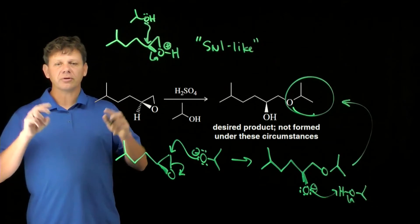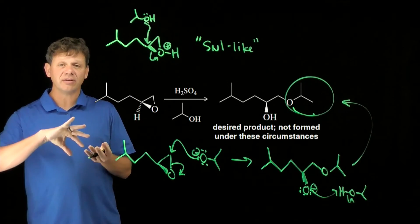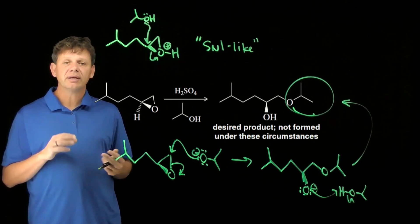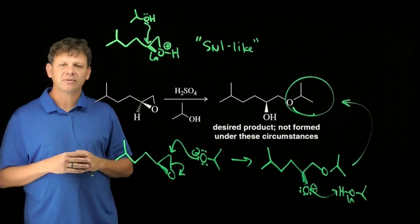So by taking a reaction that goes under SN1-like conditions and switching it to SN2, we get substitution at the other carbon of the epoxide.